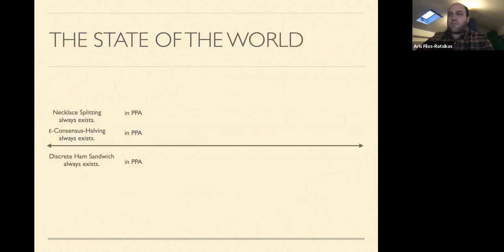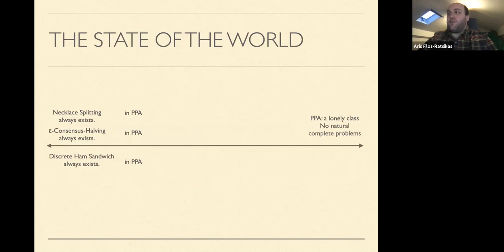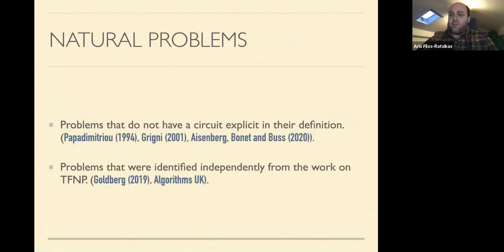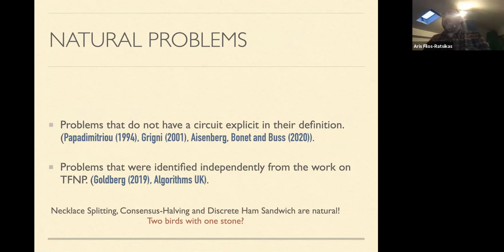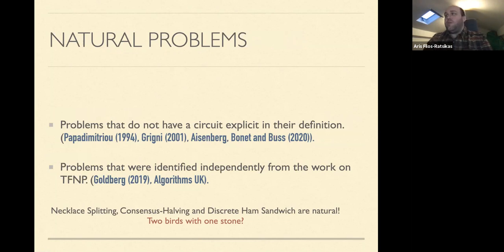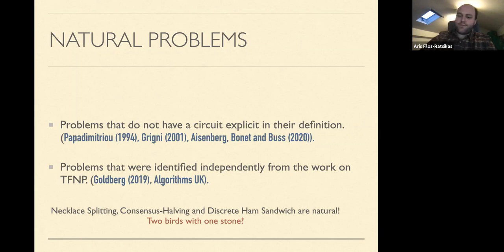PPA was a rather lonely class containing no natural complete problems until recently. There is also a definition of 'natural' by Paul: problems identified independently from the work on TFNP, problems we cared about for other reasons that happen to lie within these classes. Necklace splitting, consensus halving, and discrete ham sandwich are natural according to both definitions, so working on these results was an opportunity to hit two birds with one stone — settling the complexity of well-known problems and identifying the first natural complete problems for PPA.